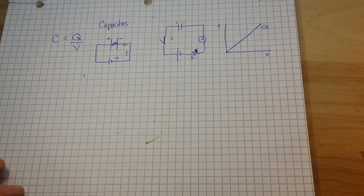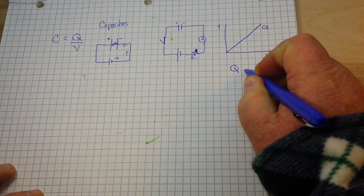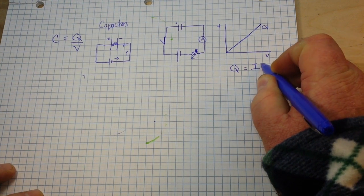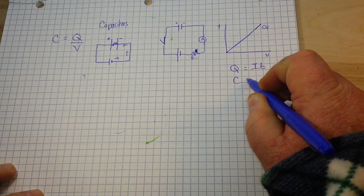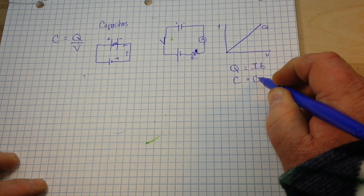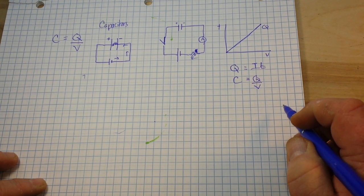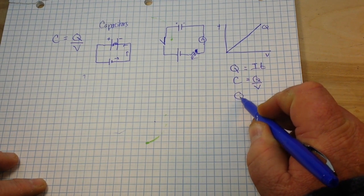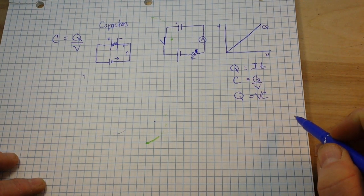So, if we try and look at this algebraically, our charge is our current times the time. Our capacitance, our capacitance, that we said over here in the beginning, is our charge divided by our voltage. So, our charge is equal to voltage times capacitance.